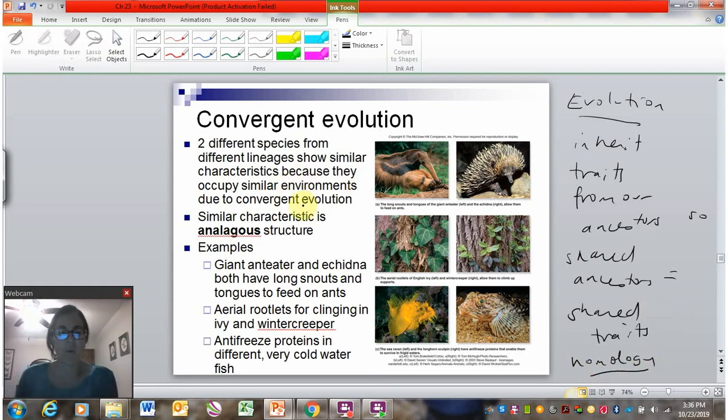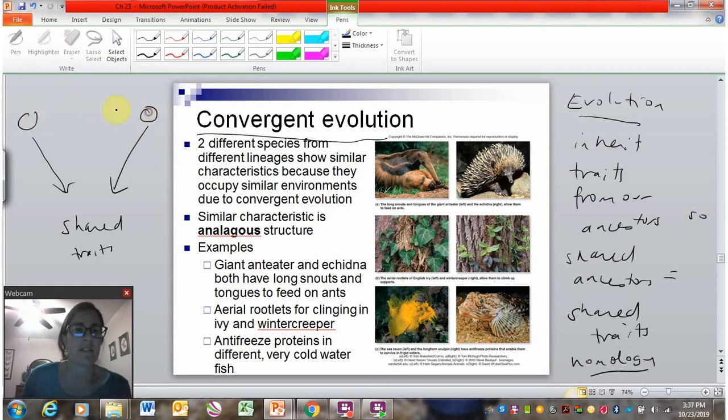But another way that we can understand change over time is convergent evolution. So convergent evolution is when you have a shared trait that occurred in two different mechanisms or two different pathways, even though there is not a shared ancestor. So we have different ancestors.